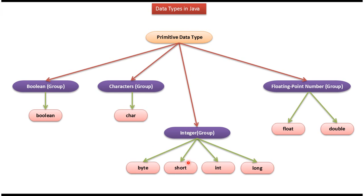It has byte, short, int and long data types and the fourth group is floating point number and it has float and double data types.